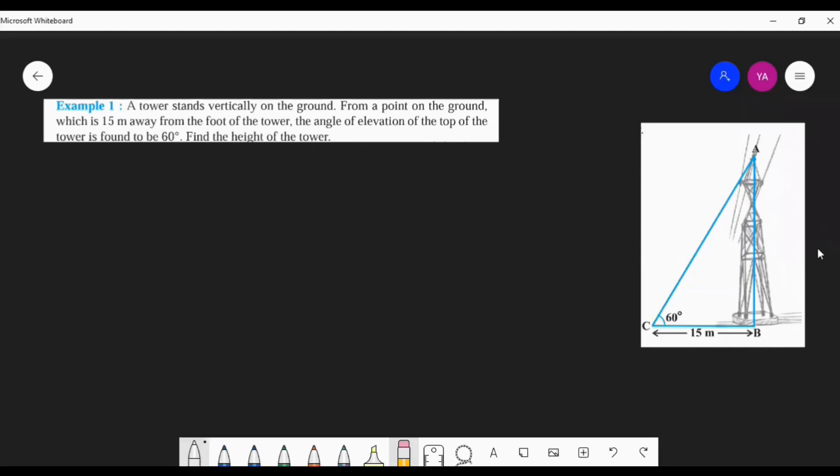So how can we calculate the height of the tower from this? tan 60° is equal to—right, tan 60°. We all know we have studied the trigonometric values of 60°, 45°, 30°, and 0° and 90° also, but we don't want those in this lesson.